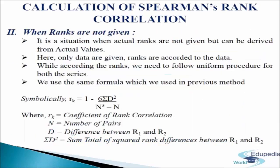Now we come to the second situation: when ranks are not given. In this case, actual ranks are not given but they can be derived from the actual values. Here only data are given and ranks are accorded to the data. While assigning ranks, we need to follow a uniform procedure for both series — if we start giving ranks from the highest value in series 1, we do the same for series 2. We use the same formula: rk equals 1 minus 6 sigma d square divided by n cubed minus n.